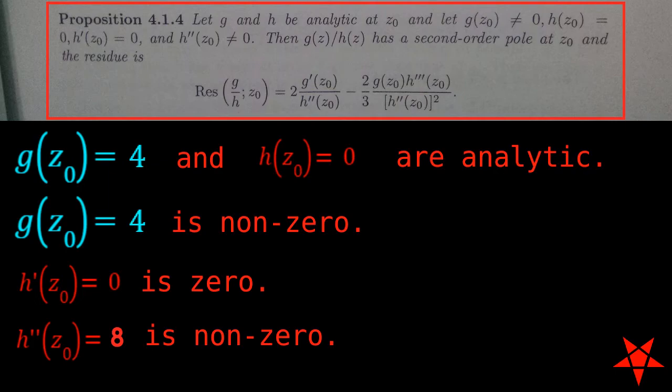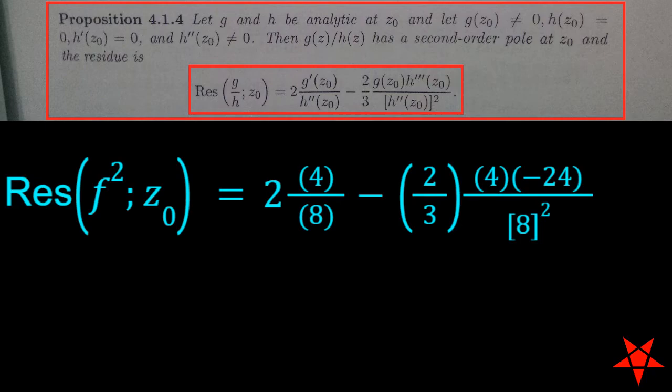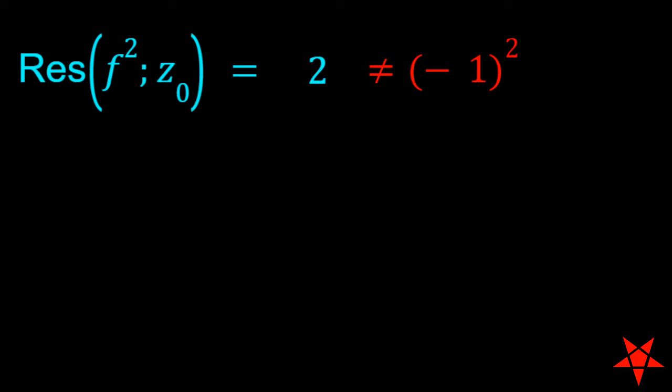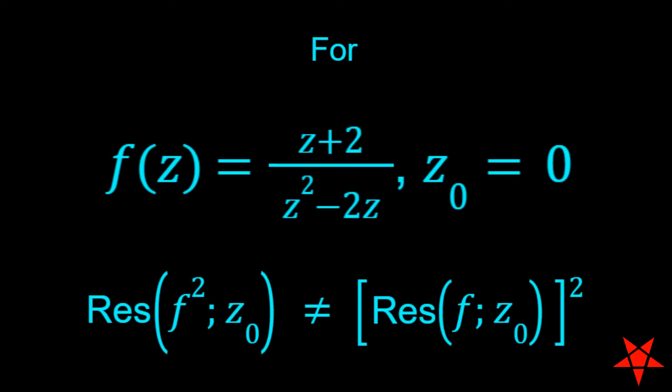The formula in Proposition 414 produces a value of 2 for the residue of the square of f of z at z0, which is not negative 1. This again shows that for a given residue of f of z at z0, the residue of the square of f of z at z0 need not be the square of the original residue.